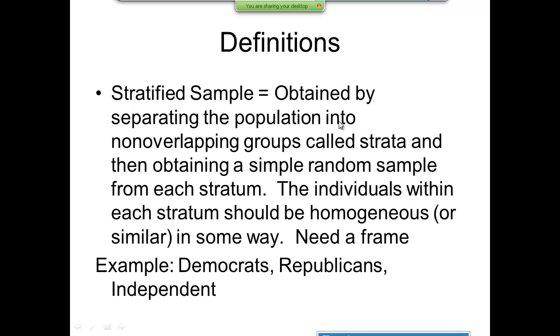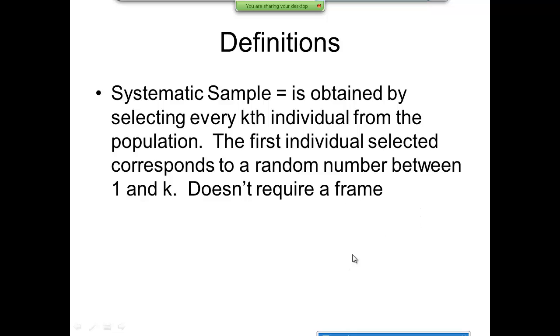Now, we have a stratified sample. This is obtained by separating the population into non-overlapping groups called strata and then obtaining a simple random sample from each stratum. The individuals within each stratum should be homogeneous or similar in some way. And you need a frame to understand this. This is like an example I just gave, where you have Democrats, Republicans, and Independents. You want to make sure that you hear from all three groups. But if your state is mostly Republicans, it could be that if you take a normal random sample, you'll end up with all Republicans. So you get no idea of what Democrats and Independents are saying.